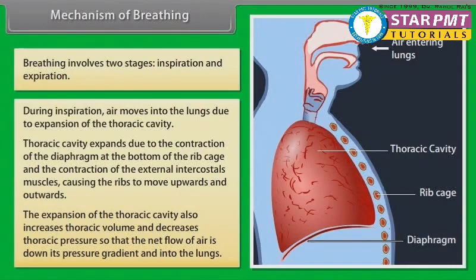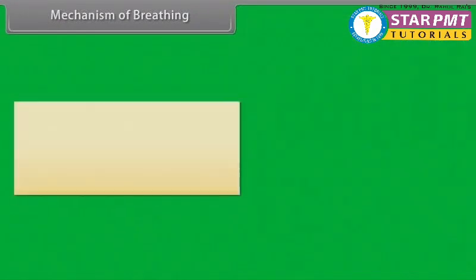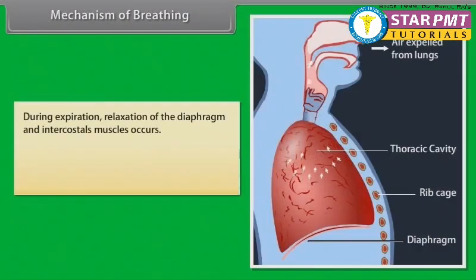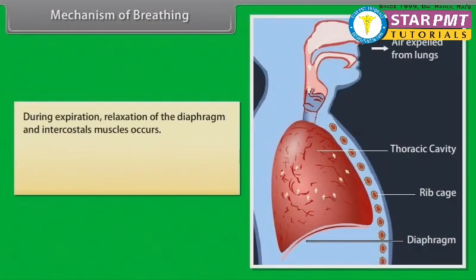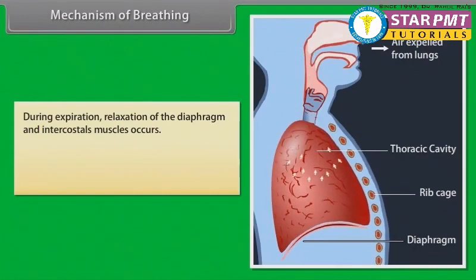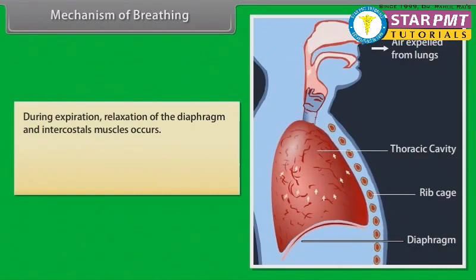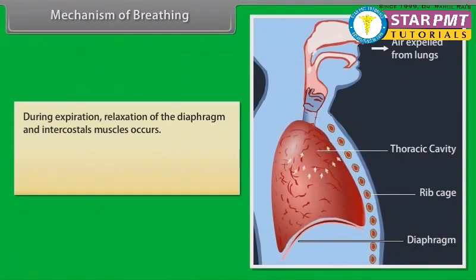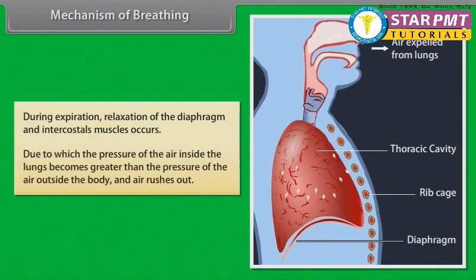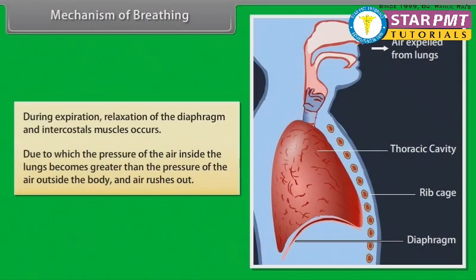During expiration, relaxation of the diaphragm and intercostal muscles occurs, due to which the pressure of the air inside the lungs becomes greater than the pressure of the air outside the body, and air rushes out.